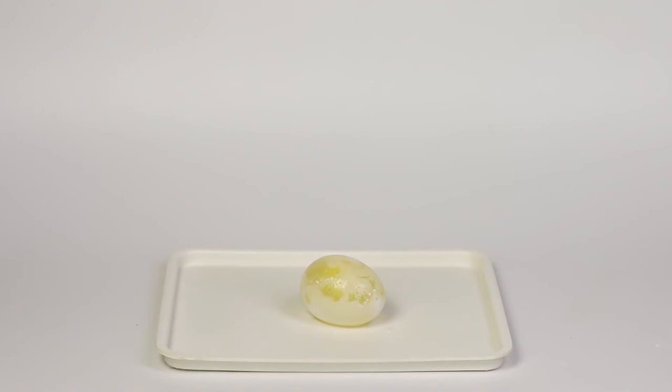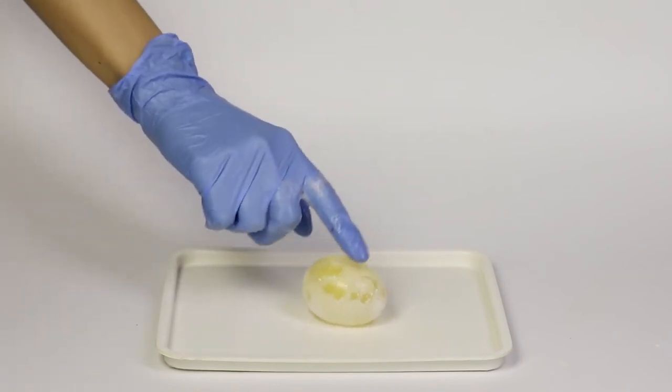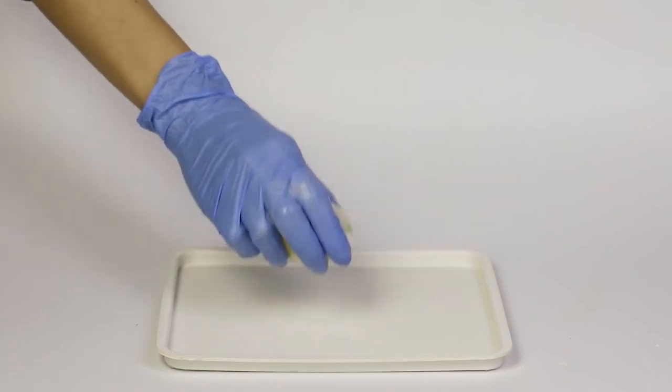When the shell dissolves, an elastic-like membrane remains. The result is that the egg becomes somewhat like rubber.